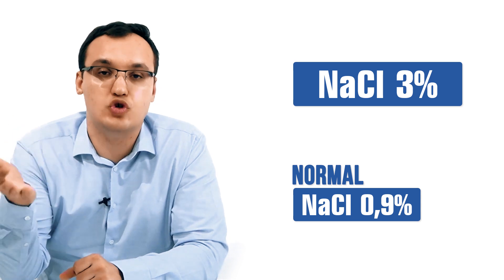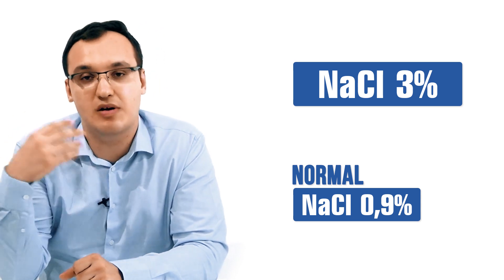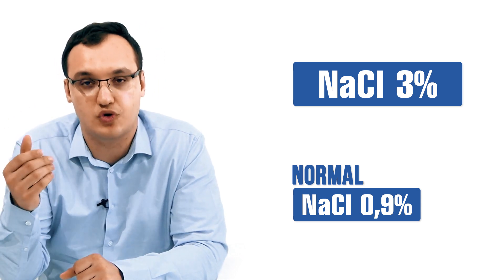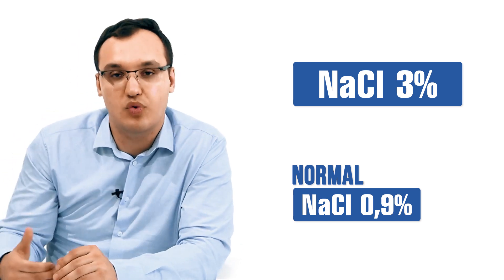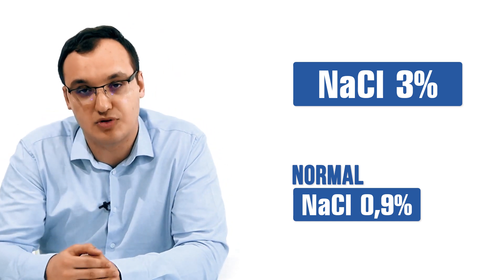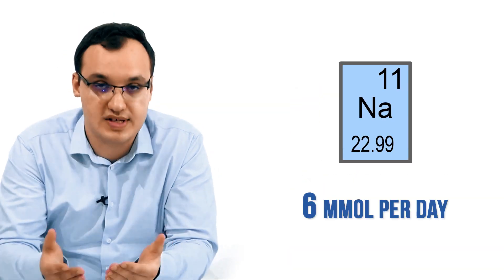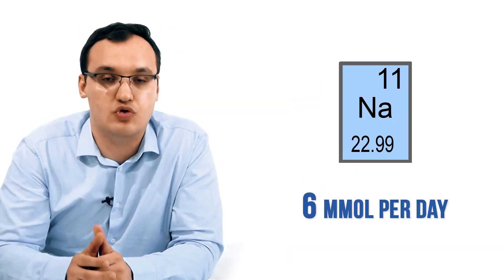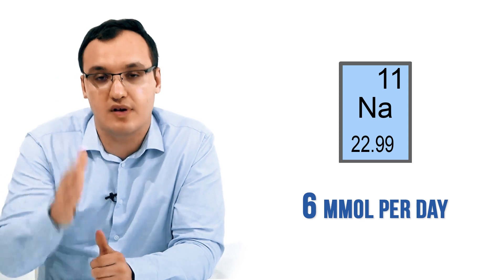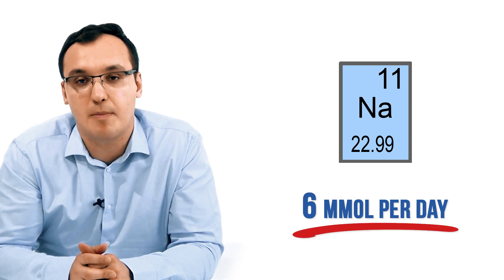We can give 3% saline solution — an infusion with water that contains 3% sodium. The normal saline solution is usually 0.9%, but this is a stronger, higher-concentration solution. Thereby we can treat hyponatremia more quickly. But as we said, we need to calculate how much to give in order to always keep within this 6 millimole per liter per day limit.